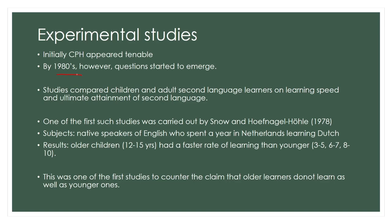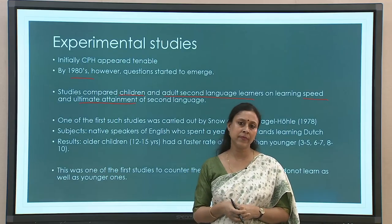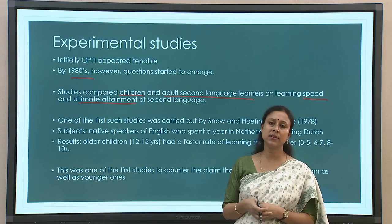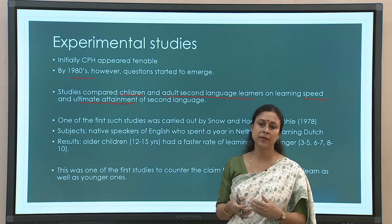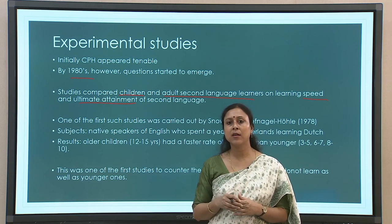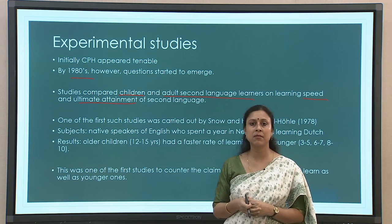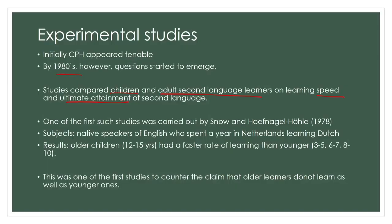Many studies during this time compared children and adult second language learners on learning speed and ultimate attainment. Ultimate attainment is basically the approximation of the native speaker's language proficiency. Earlier the term used was 'native-like proficiency' or 'native-like competence' — a bilingual was considered highly proficient when he or she attains native-like competence in the second language. Later on it was realized this probably does not always happen, and hence the term 'ultimate attainment' is now used for the highest amount of competence an L2 learner can achieve.